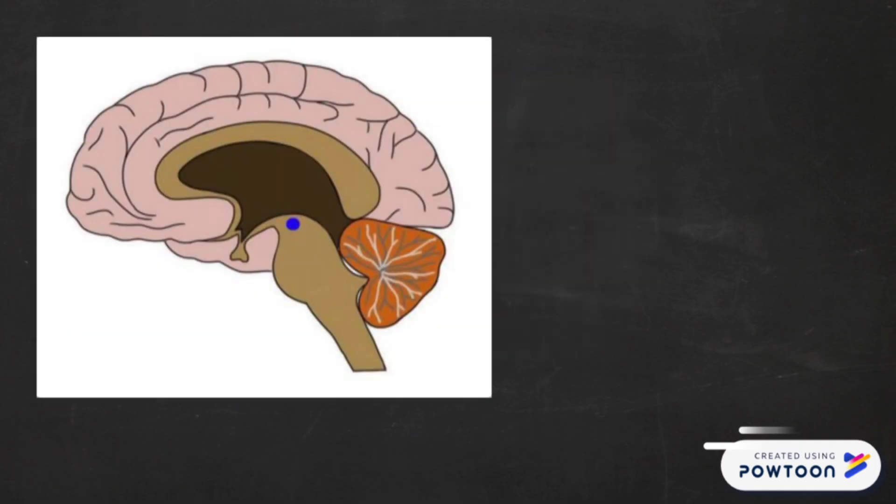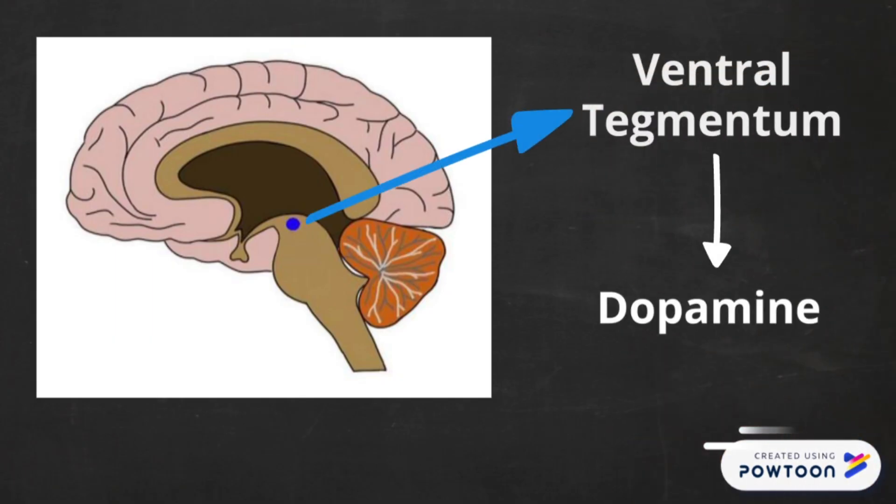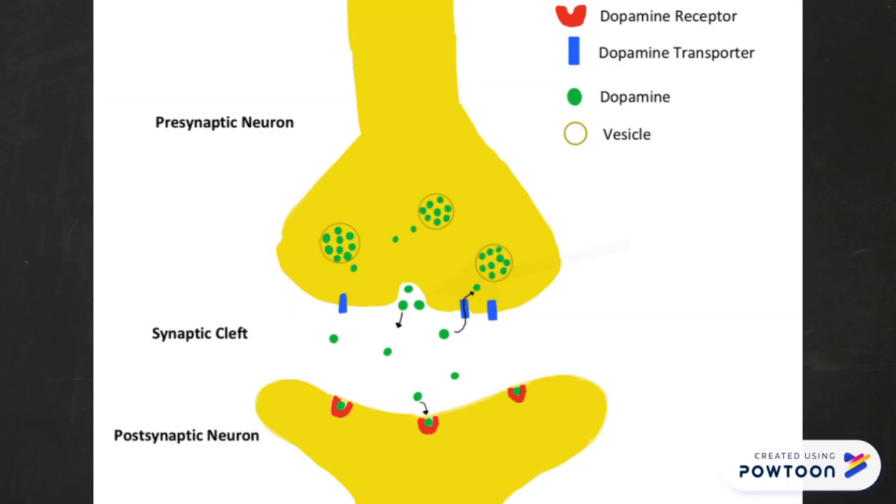Now you may be asking yourself, how does cocaine affect the brain? Well, the part of your brain called the ventral tegmentum releases dopamine, and dopamine is a part of the reward system and binds to dopamine receptors in the brain to allow you to feel pleasure and euphoria. Dopamine is released from presynaptic neurons and travels through the synaptic cleft to dopamine receptors on postsynaptic neurons, which triggers the good feeling.